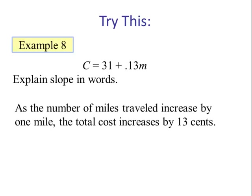And the next part of the question asks to explain the slope in words. We say: As the number of miles, which is our independent variable, traveled increases by 1 mile (that is the unit), the total cost increases by 13 cents.